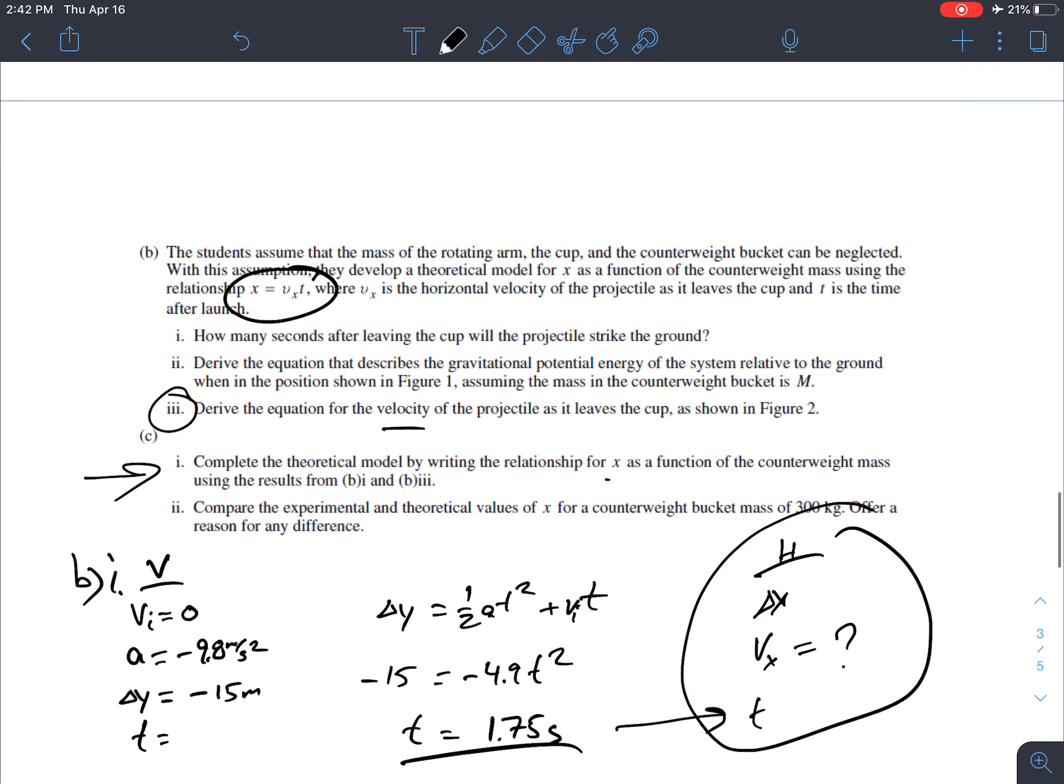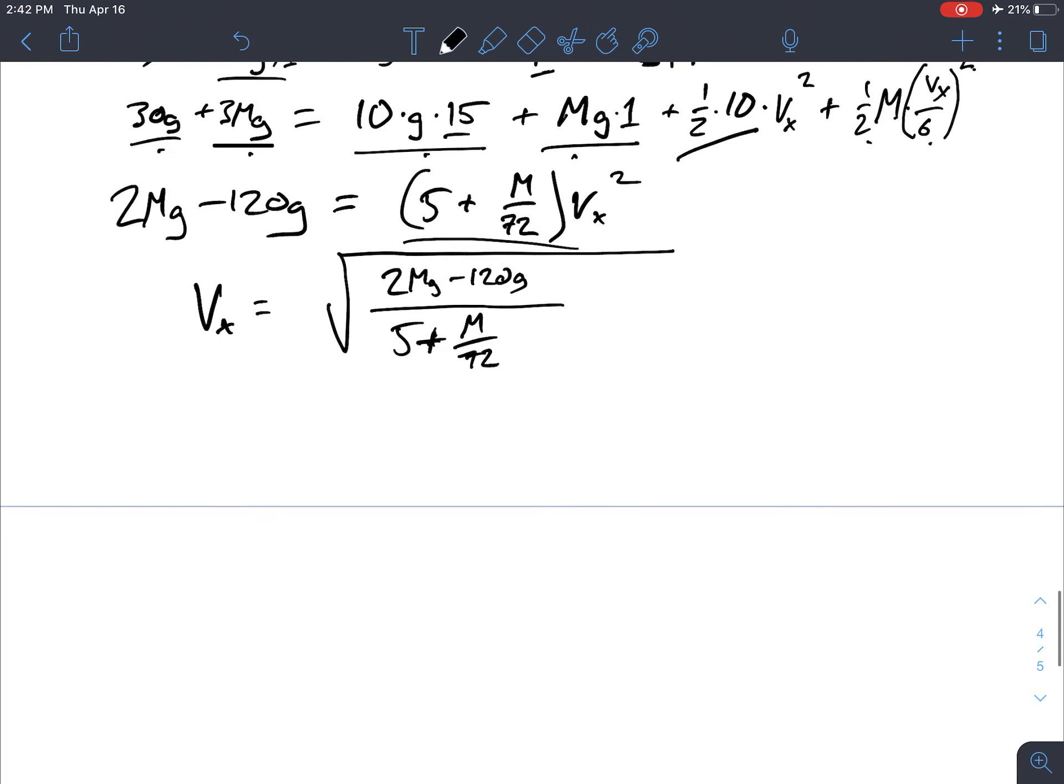So I guess vx is equal to the square root of this over, I got it numbered correctly. And then in C, one, complete the theoretical model by writing the relationship for x as a function of mass.